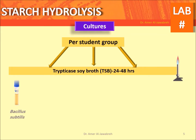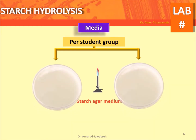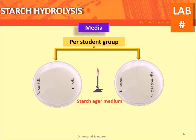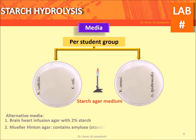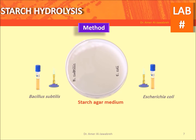Cultures: provide each student group with four types of bacteria. Media: provide each student group with two plates of starch agar — alternatively, brain heart infusion agar with two percent starch, Mueller-Hinton agar, or nutrient agar with 0.5 percent starch can be used.